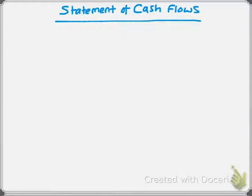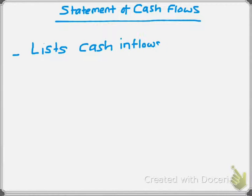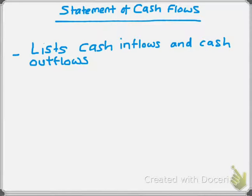The fourth and final financial statement we're going to talk about is the statement of cash flows. The statement of cash flows only lists cash — it only lists cash inflows and cash outflows of the company. Keep in mind that this one only lists cash. Since it only talks about cash, we prepare this using different information.